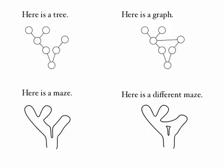At the top left we can see a tree, at the top right we can see a graph. You'll notice that the difference here is the connection between two of the nodes forming a cycle in the graph.